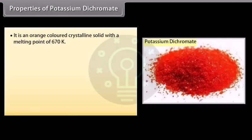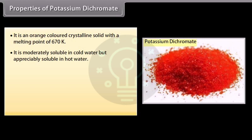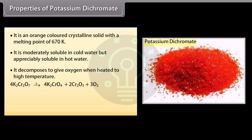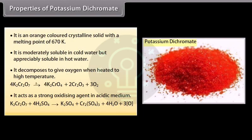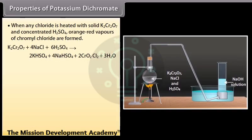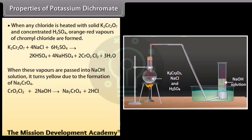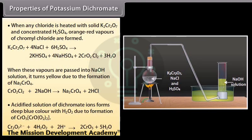Potassium dichromate is an orange-colored crystalline solid with a melting point of 670 K. It is moderately soluble in cold water but appreciably soluble in hot water. It decomposes to give oxygen when heated to high temperature and acts as a strong oxidizing agent in acidic medium. When any chloride is heated with solid K₂Cr₂O₇ and concentrated H₂SO₄, orange-red vapors of chromyl chloride are formed. When these vapors are passed into NaOH solution, it turns yellow due to formation of Na₂CrO₄. Acidified dichromate solution forms a deep blue color with H₂O₂ due to formation of CrO₅.